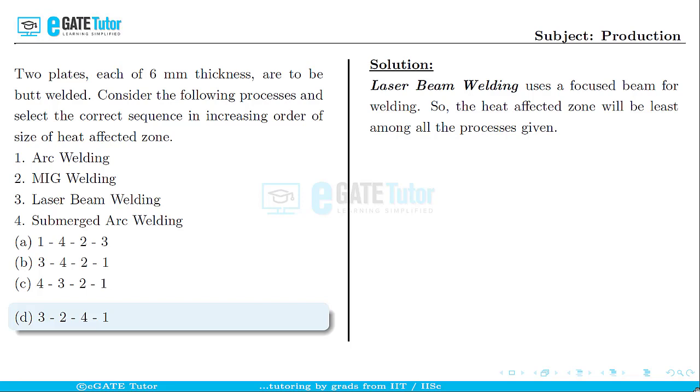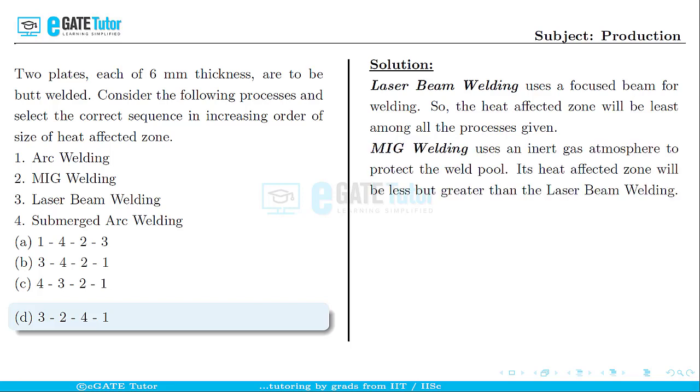The next process which comes in the order is MIG welding or metal inert gas welding. Since this process uses an inert gas atmosphere to protect the welding pool from atmospheric contamination, its heat affected zone will be less but it will be greater than laser beam welding.